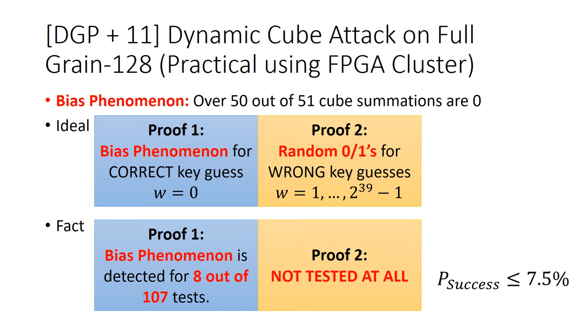At ICISC 2011, Dinur et al. proposed the first dynamic cube attack on full Grain-128. It is a practical attack implemented on an FPGA cluster. They use 51 specific cubes to detect the non-randomness named the bias phenomenon, which means over 50 cube summations are zero. They expect that there is bias phenomenon detected for the correct key guess, and for wrong guesses the cube summations are random zeros or ones. But according to their experiments, the bias phenomenon can only be detected for 8 out of 107 randomly chosen keys. Furthermore, the randomness of the wrong key guess has never been tested.